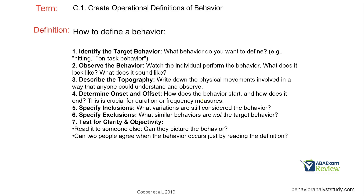Look at the onset and offset — when does it start and how does it end? That matters for measurement. Think about inclusions and exclusions, and consider response classes — how broad they can be. What is our true focus? What are we trying to eliminate, or maybe reinforce? Then test it: read it to someone else, let them describe what they picture. Can two people agree on when the behavior occurs just by reading the definition? Don't explain it — just have them read it and see if they agree.